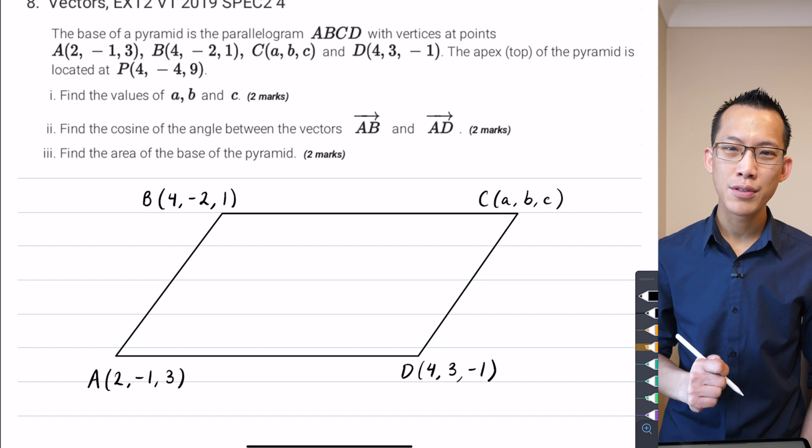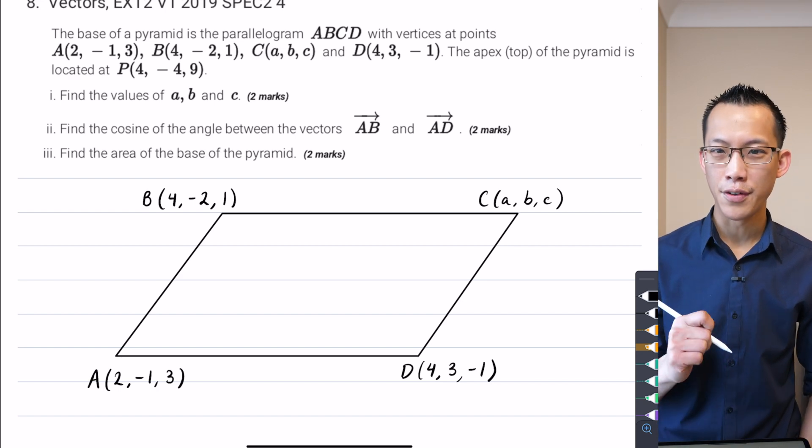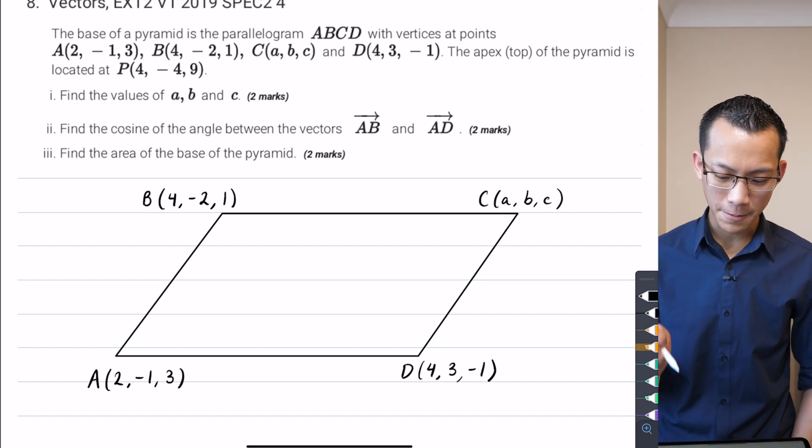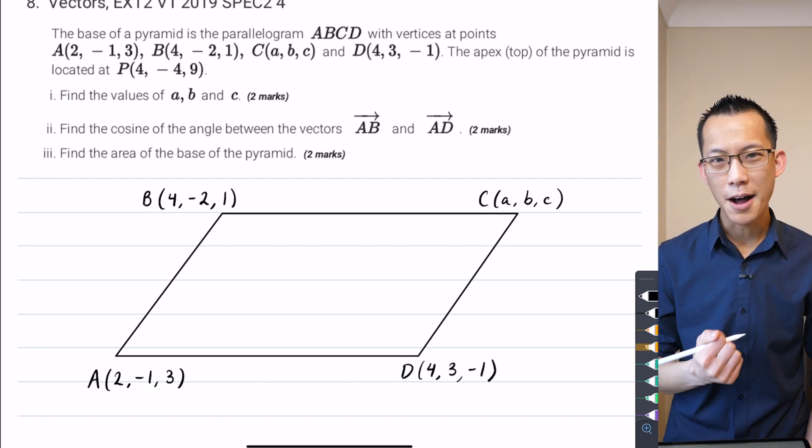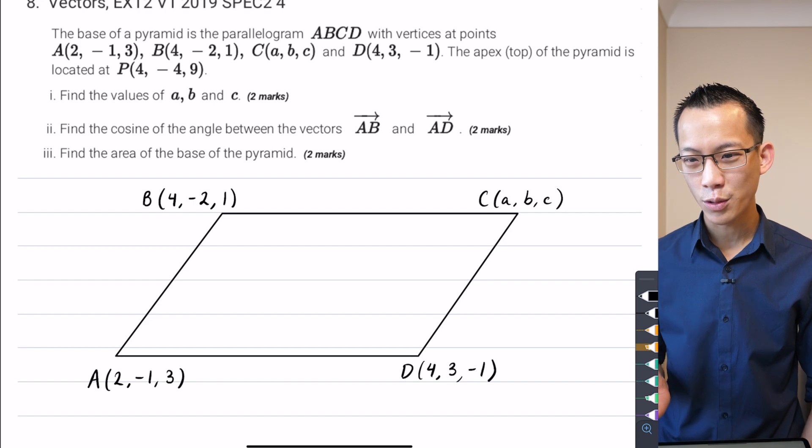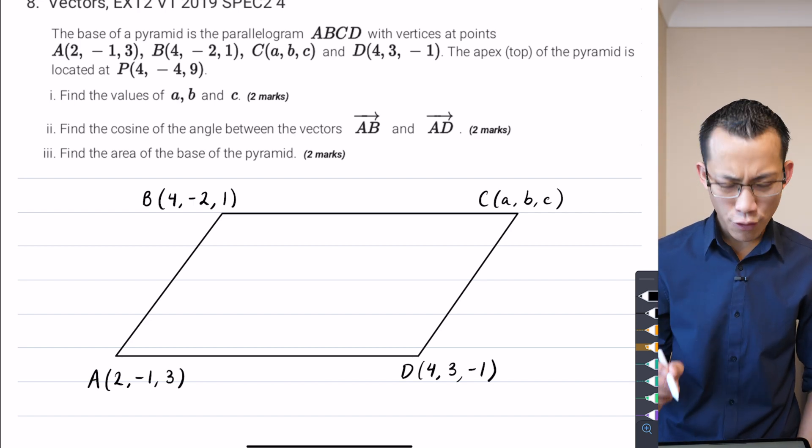They provide you the coordinates of the different vertices, including the apex of the pyramid which is point P. Though I will point out, if you had a look through your question and read through part 1, part 2, part 3,